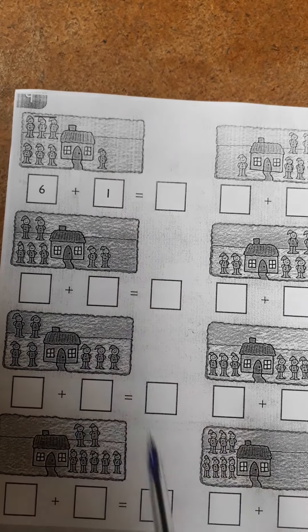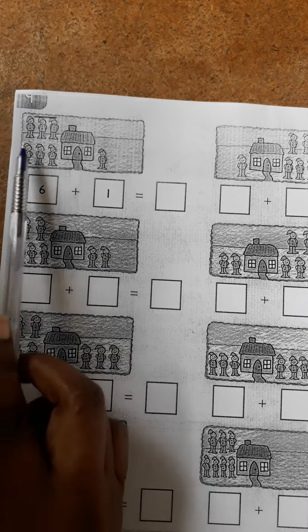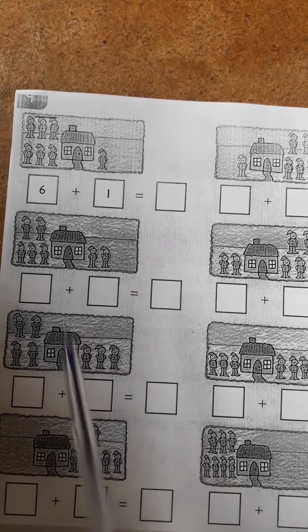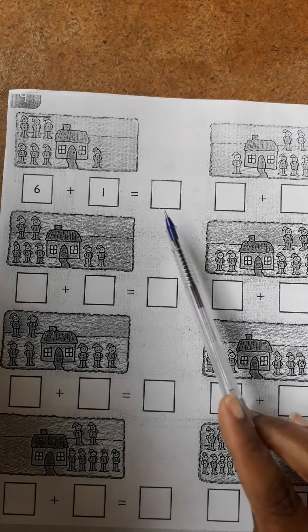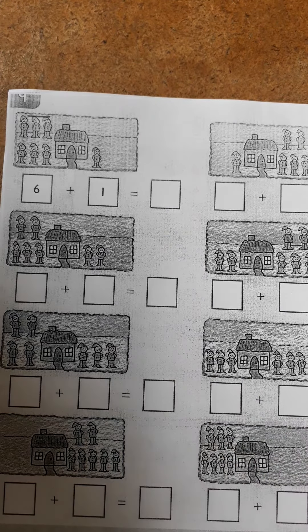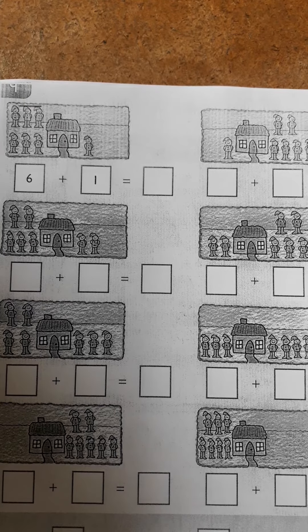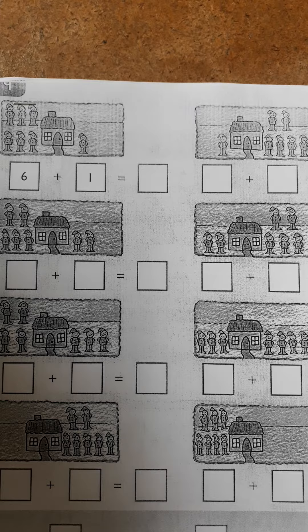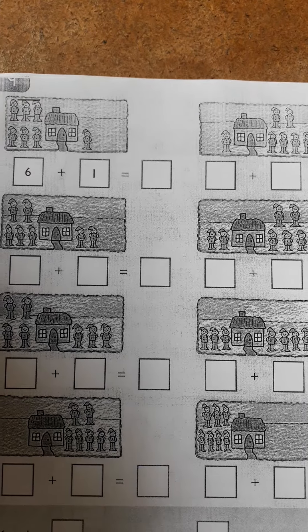So here to find the answer, we're going to count all our pictures together which is 1, 2, 3, 4, 5, 6 and a 7. So that means our answer is 7. So you are going to do the rest in this worksheet like that, counting the pictures and then putting the answer.